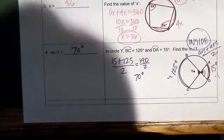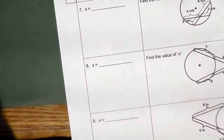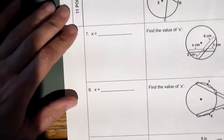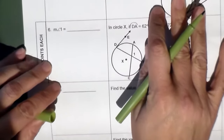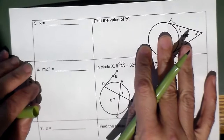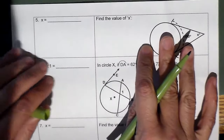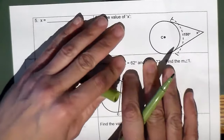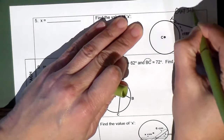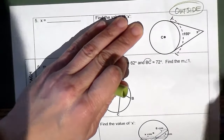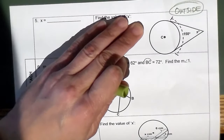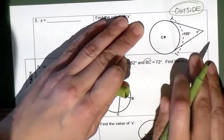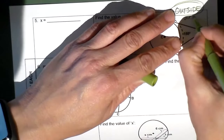When you're looking for that angle, you look for the two arcs that go with the two vertical angles. The arc of 15 goes with angle 1, and 125 goes with its vertical. Then you divide by 2 — it's the average of the two arcs. So 15 plus 125 equals 140, divided by 2 equals 70 degrees. Inside the circle but not in the center: add the two arcs and divide by 2.